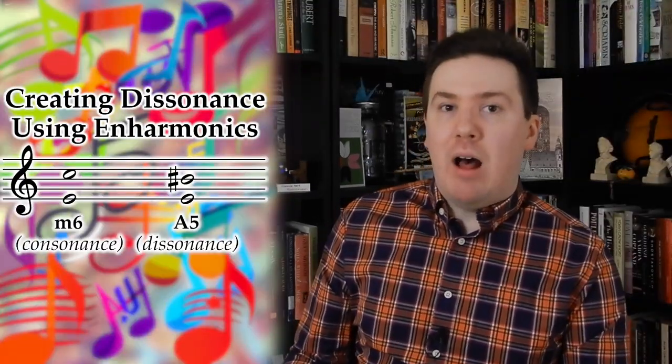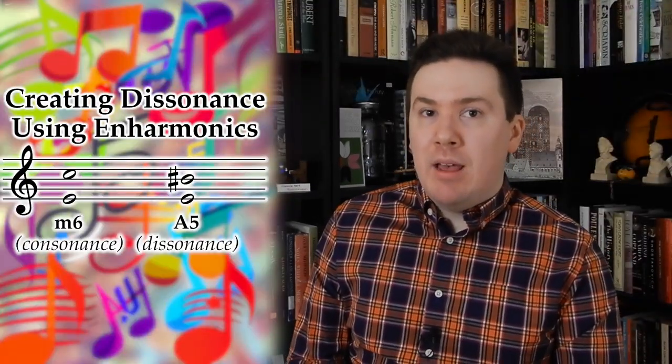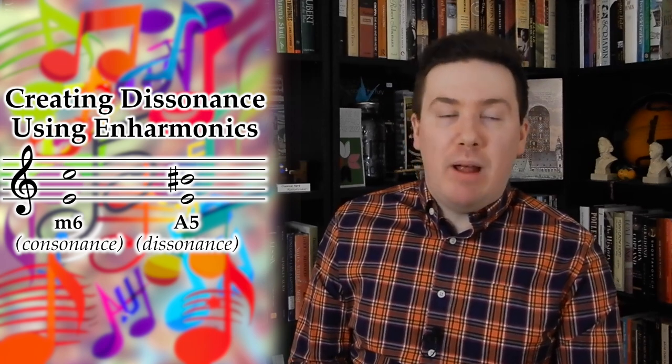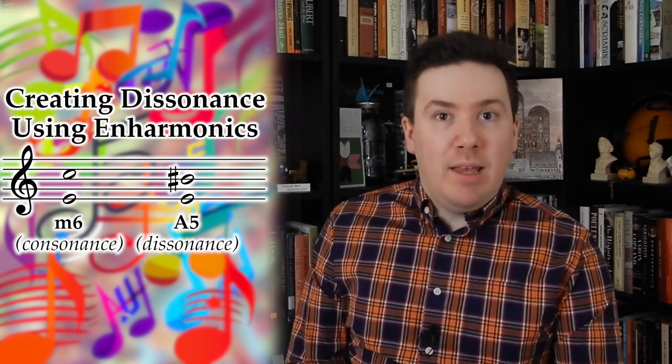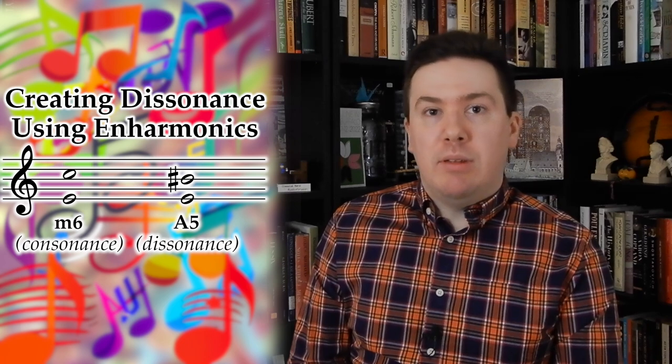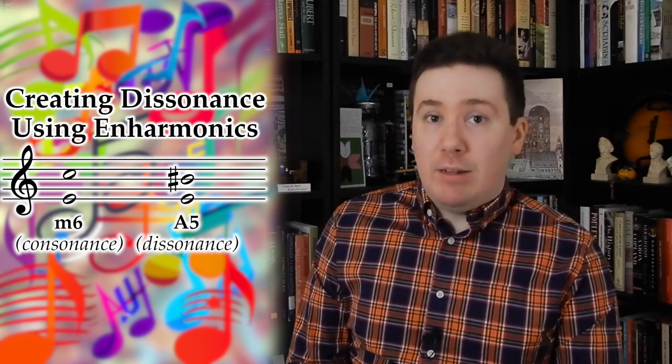When we talk about consonance and dissonance in music, we can be referring to a number of things based on context. One of those contexts is how the music is notated. A perfectly fine consonance, like a minor sixth, becomes a dissonance when re-spelled as an augmented fifth — in systems where these are the same interval, of course. They certainly are on the piano. While you can have dissonances that sound like consonances, you have to look at the context of how the composer is using them.